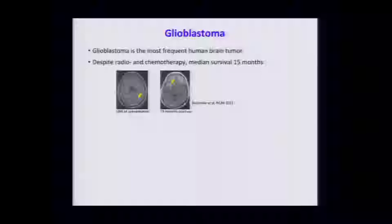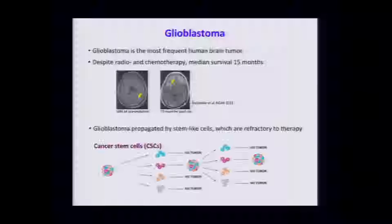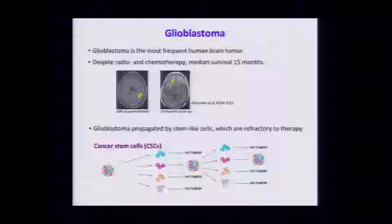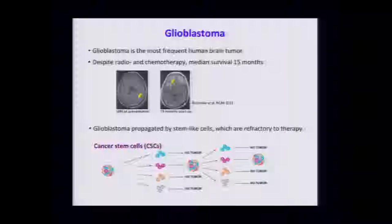Glioblastoma is the most frequent human brain tumor, and despite resection of the tumor and radiation and chemotherapy, the immediate survival is very short and it's almost uniformly fatal. There's a lot of evidence that not all cells in glioblastoma are created equal, but rather there's this subpopulation of very aggressive stem-like cells that propagate the tumor.